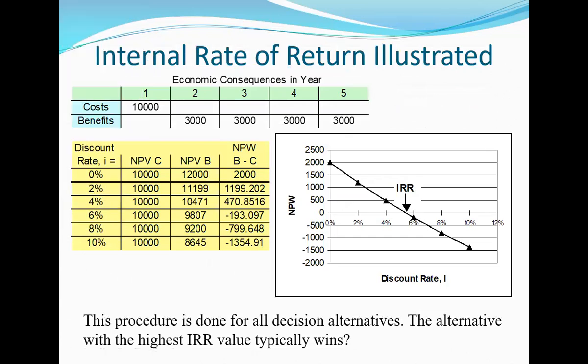When you're trying to calculate IRR, you don't use a given interest rate. Instead, you come up with a bunch of different discount rates — zero percent, two percent, four percent, six percent, eight percent, ten percent — and then you calculate the net present value of that project. You figure out what the net present value is at each different interest rate.